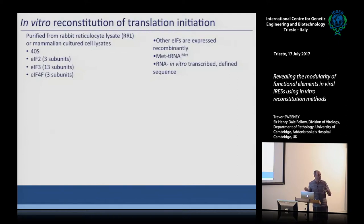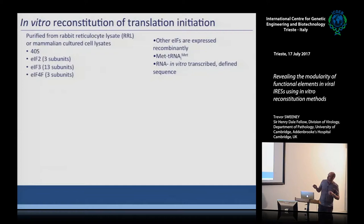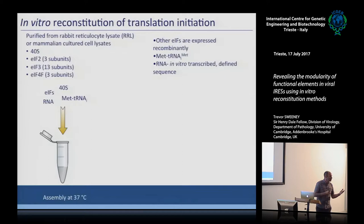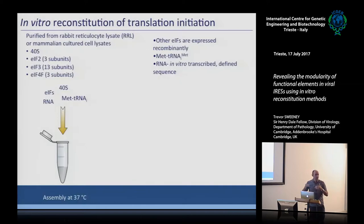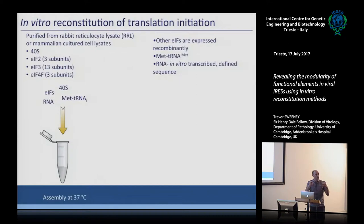The small initiation factors that we can express recombinantly — EIF1, EIF1A, EIF4A — we do express in E. coli to minimize the amount of lysate needed. We also synthesize and purify initiator tRNA recombinantly. All these components can then be added into a reaction mixture with an in vitro transcribed RNA of interest, and we can modify the RNA to look at the role of specific sequences and structures.